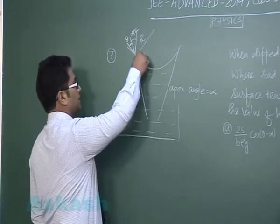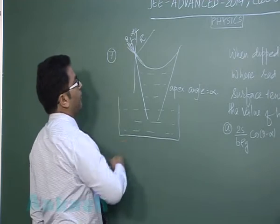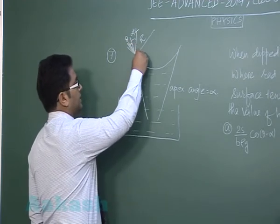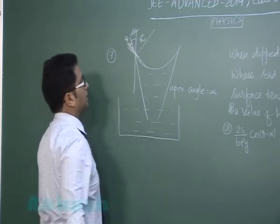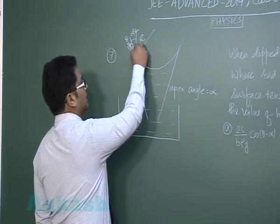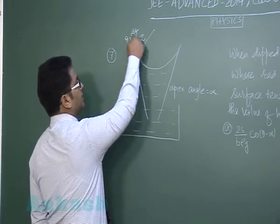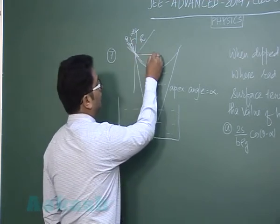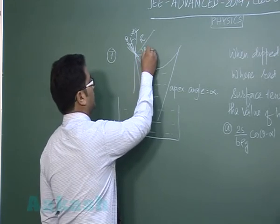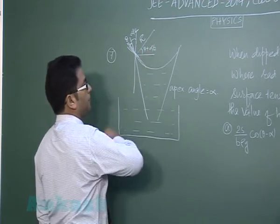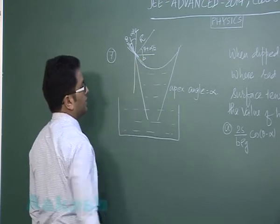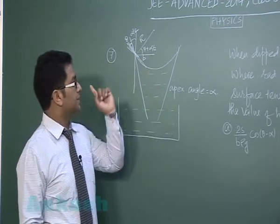Now you could see this is the meniscus and the radius are perpendicular. In other words this angle will be pi by 2 minus theta plus alpha by 2, while this angle will be theta plus alpha by 2 and this radius of the cross section is b.